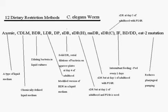AXINIC is a type of liquid medium. CDLM stands for chemically defined liquid medium. BDR is bacterial dietary restriction — it's just diluting bacteria in liquid cultures like CDLM and AXINIC, but it's a different culture. LDR is another version of BDR in a different liquid medium.